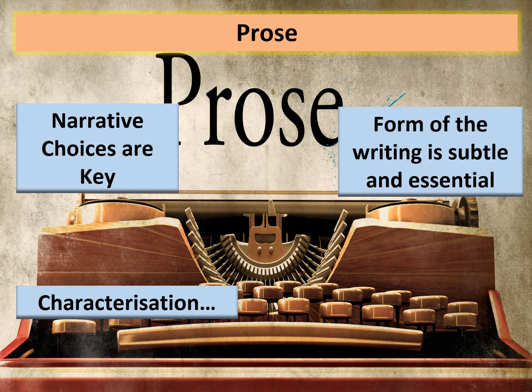Leading us on to prose: we need to understand that the narrative choices are absolutely key. Who is the narrator? What does the narrator understand? The form of prose is determined by the narration. The form itself can be quite subtle — it is made up of the language used, the individual word choices, and how those are put together with the structure. Once you understand what the writing is trying to do, the form and how it contributes to that purpose should become much clearer.